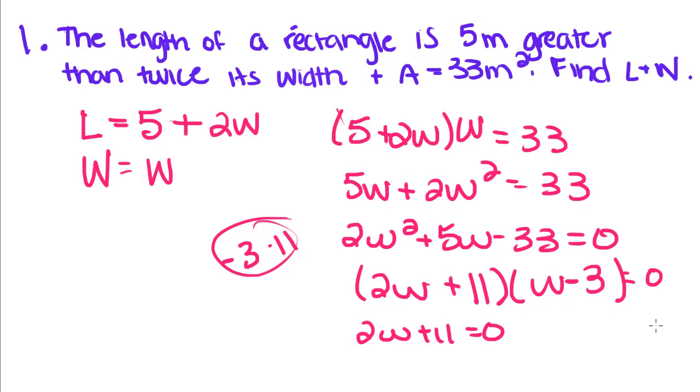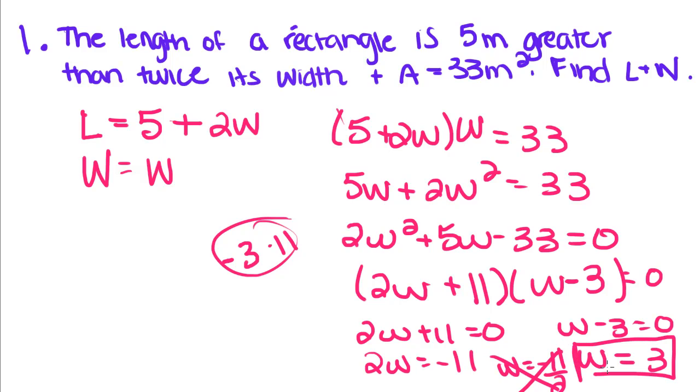2W plus 11 equals 0, W minus 3 equals 0. So add 3 over and we get W equals 3. With this we get W equals negative 11 halves, which since we're talking about length can't be the answer. So it wants us to find its length and the width. So its width is right here, W, but its length is equal to 5 plus 2 times W which is 3. So its length is equal to 11.